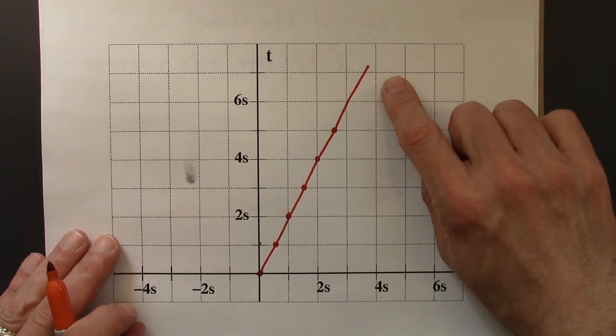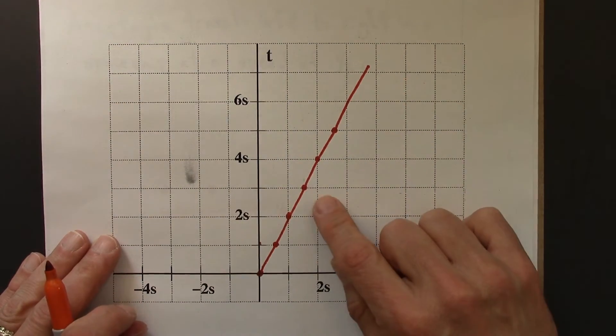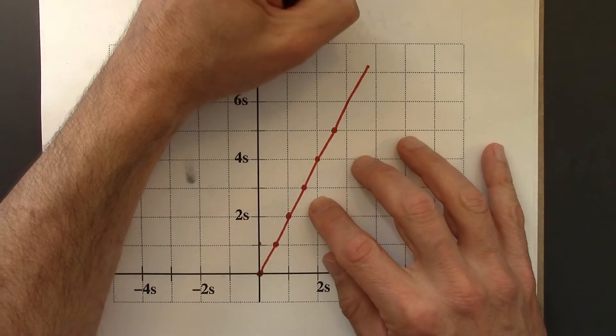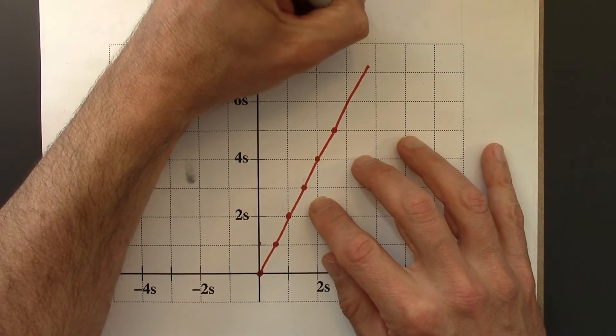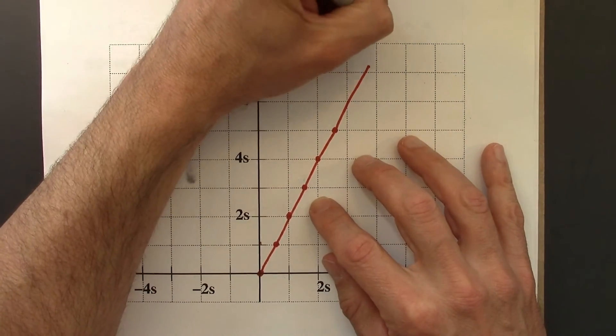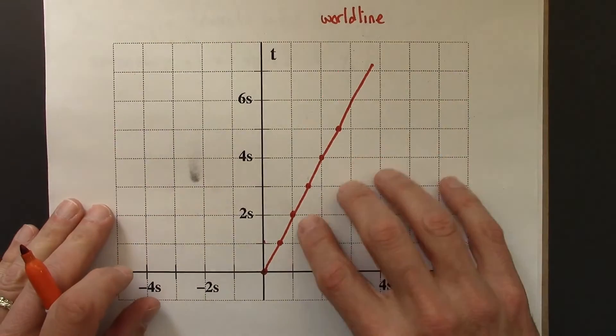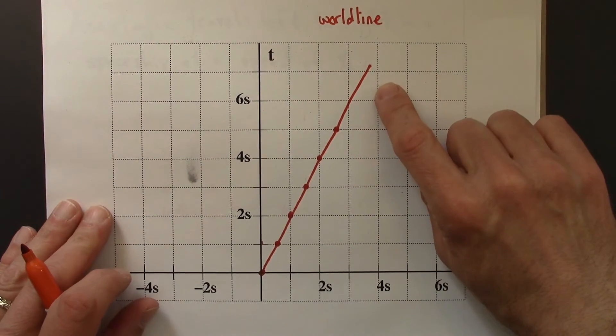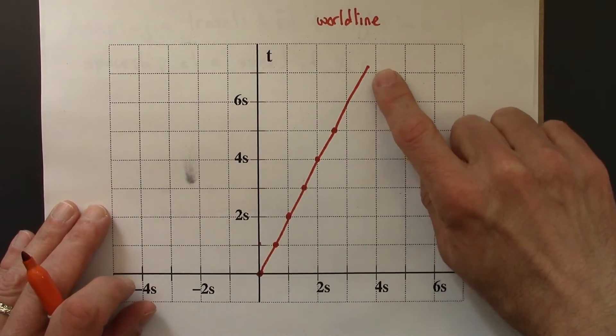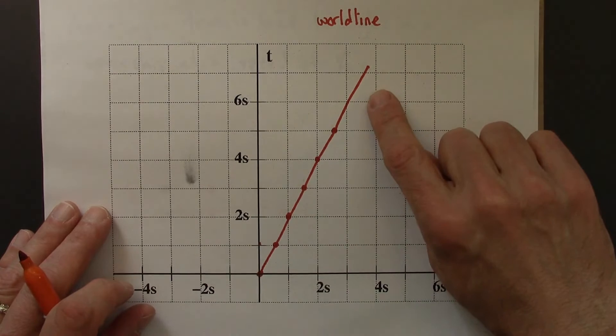This line on a spacetime diagram has a special name, it's called a world line. So this would be the world line for Anastasia's spaceship, the path that the spaceship traces out in the world, in space and time.